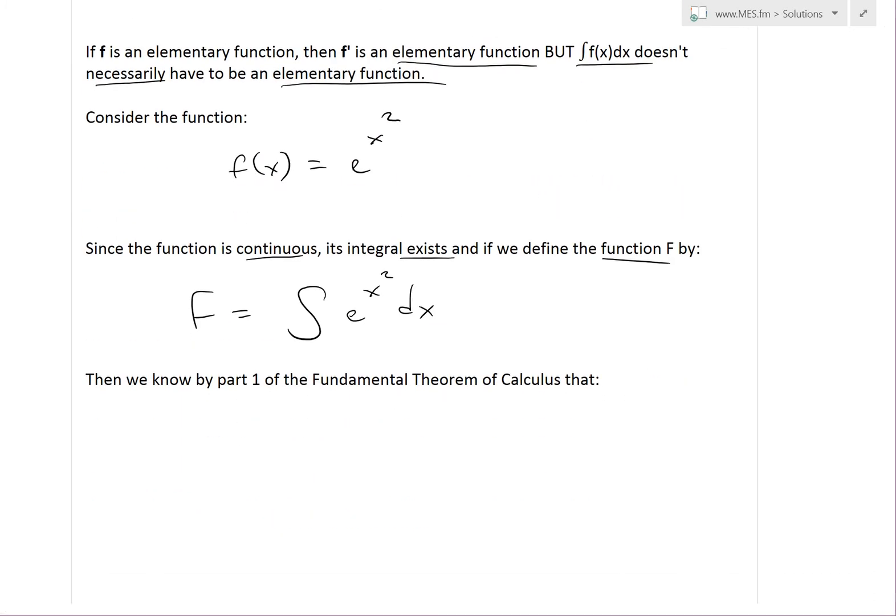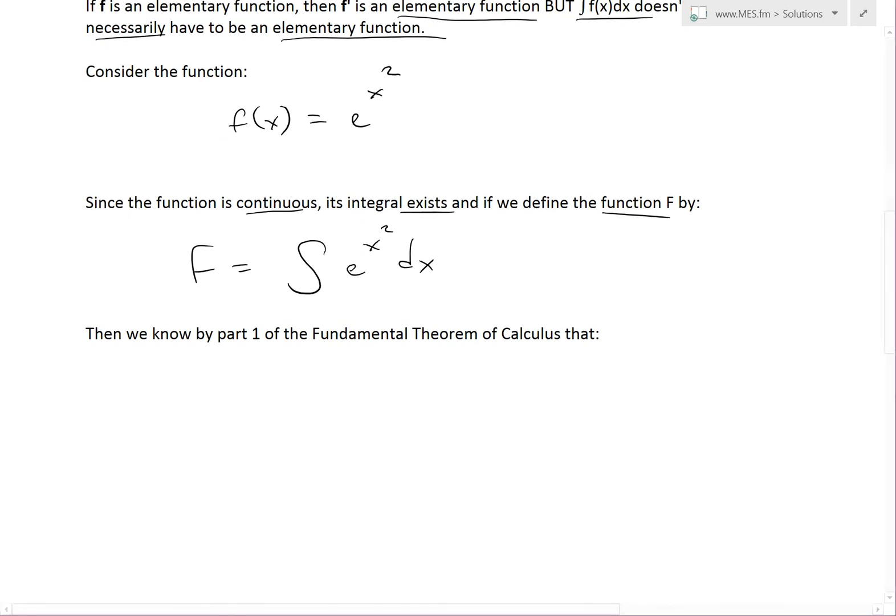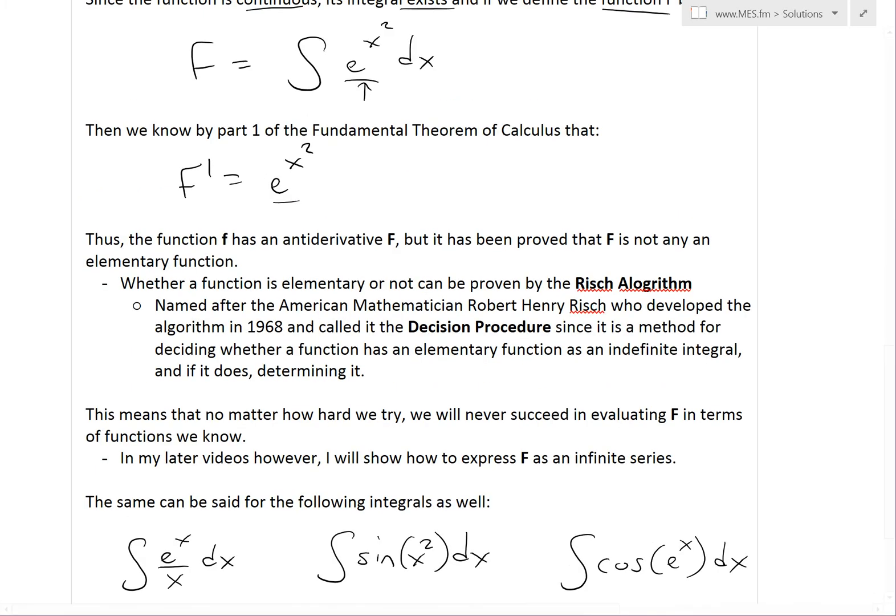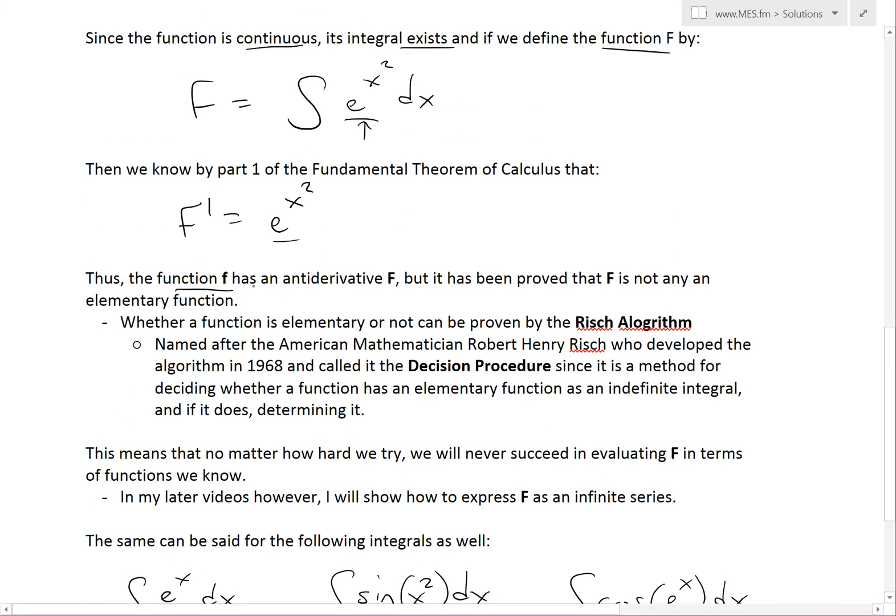And thus we know, by part one of the fundamental theorem of calculus, we have something like this, where that's the antiderivative. The derivative of this integral, or the antiderivative, is the integrand function inside e power of x squared. So what this is showing is that this function has an integral, and this function itself is an elementary function.